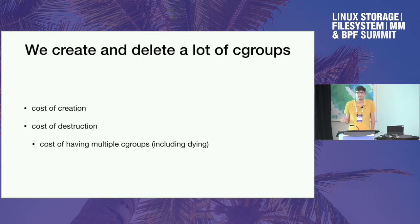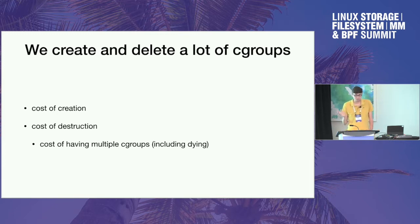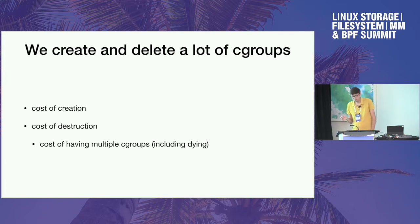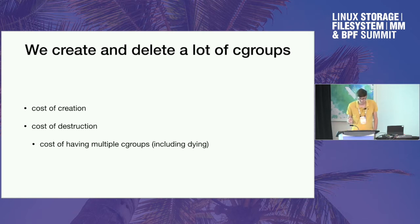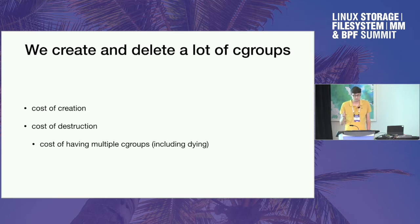We use a reference counting model and postpone destruction to a better time — at some point all references will be gone and we can release the cgroup. The obvious problem is that it usually takes a long time, and in many cases it never happens. So instead of paying to destroy the cgroup, we pay for having a lot of dying cgroups in the system.